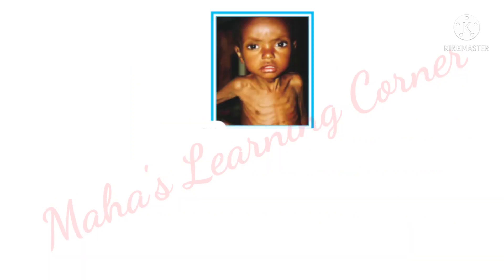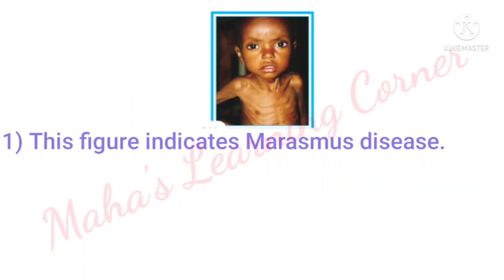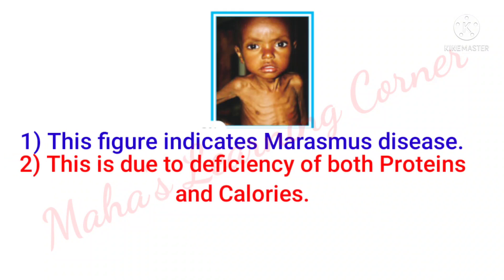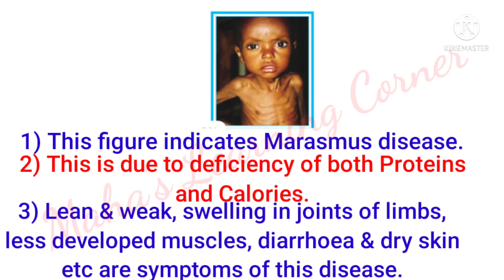This figure indicates marasmus disease. This is due to deficiency of both proteins and calories. Symptoms: lean and weak body, swelling in joints of limbs, less developed muscles, diarrhea, and dry skin.